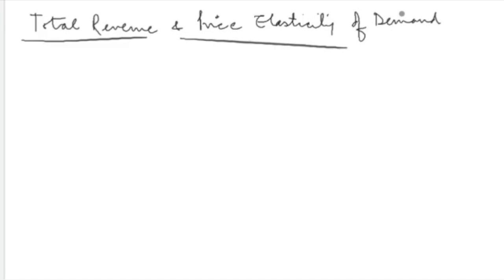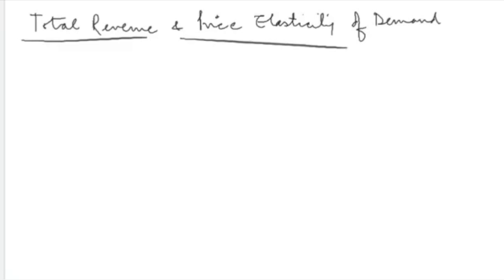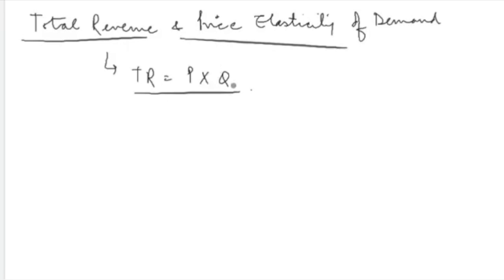What is the relation between total revenue and price elasticity of demand? Whenever we talk about demand and supply theory, total revenue is one of the key decision variables. From any firm's perspective, they are obviously interested in the revenue that they are earning from the production process. We say that total revenue is equal to price into quantity — how much quantity is sold at what price. What is the relation of this total revenue with the elasticity of demand?